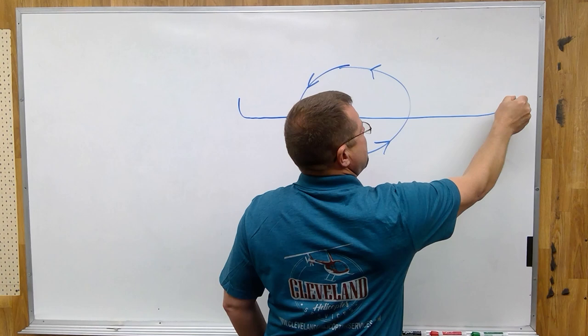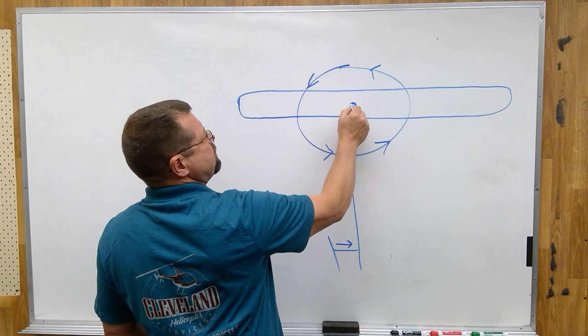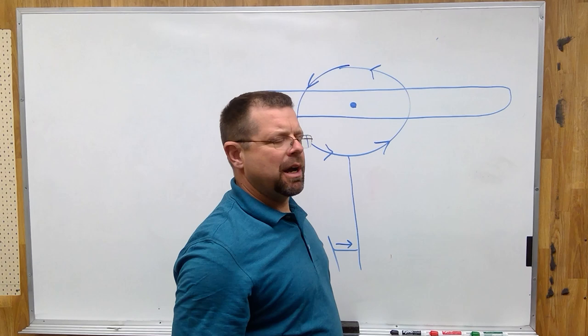Now let's draw, for the purpose of this lesson, a two-bladed helicopter, and we're going to freeze the rotation of these blades, one being on the left, one being on the right.